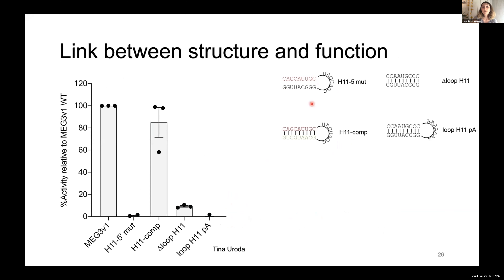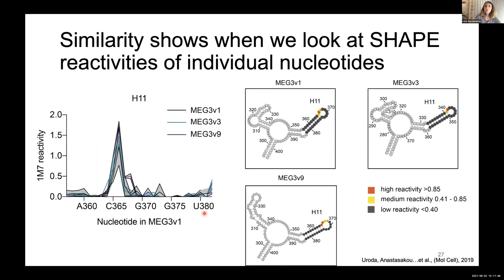We performed more surgical mutagenesis on helix 11. Mutations only in the 5' part of the helical stem, which break the helical interactions and therefore the structure of the helix, are also deleterious. However, compensatory mutations that completely change the sequence identity of the helix but restore its structure rescue this phenotype. Mutations in the loop residues are always deleterious for MEG3 function.